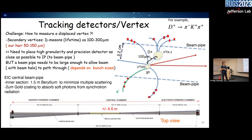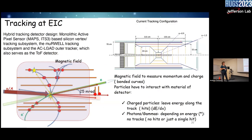To minimize multiple scattering effects in the central area of the EIC, we will use a beryllium beam pipe section with a thin gold coating to absorb synchrotron radiation from the electron beam, screening at least the soft photons. In terms of technology we are choosing monolithic active pixel sensors (MAPS) based on the ITS3 R&D development for the high-luminosity LHC.